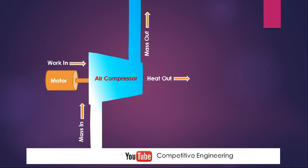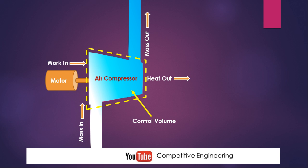So the air compressor is an open system because there is both mass interaction and energy interaction between system and surroundings. For analyzing an open system, we will be using the concept of control volume. We consider a fixed volume of the system by drawing a dotted line around it. This dotted volume inside is called the control volume, and the dotted line itself is called the control surface.